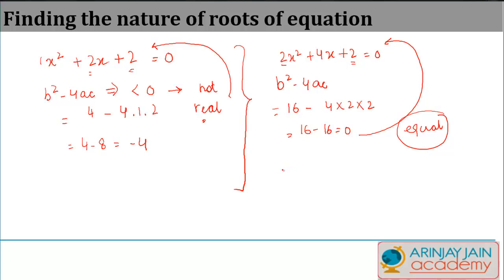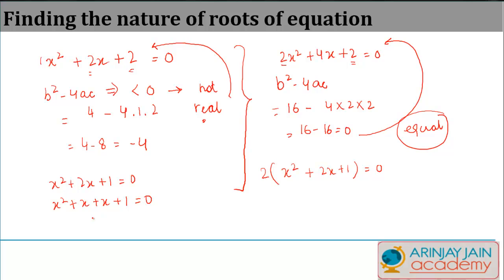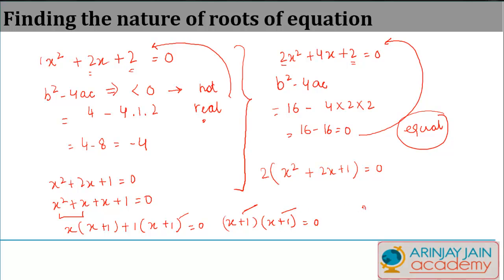Let's verify: 2x squared plus 4x plus 2 equals zero. Taking 2 as common gives x squared plus 2x plus 1 equals zero. Splitting the middle term: x squared plus x plus x plus 1 equals zero, so x(x plus 1) plus 1(x plus 1) equals zero, giving (x plus 1)(x plus 1) equals zero. Both roots give x equals minus 1, confirming the roots are equal, as discussed.